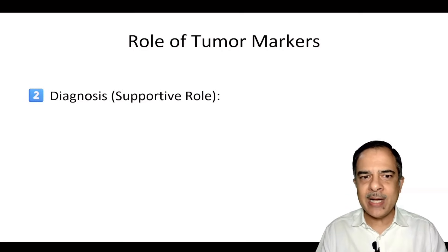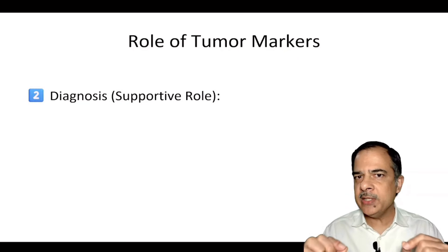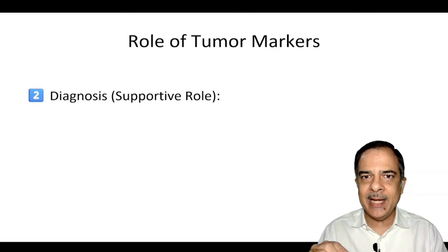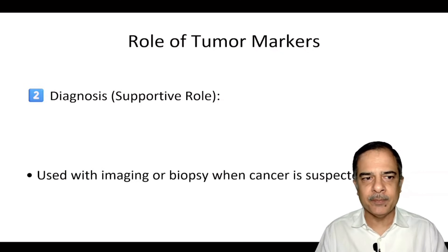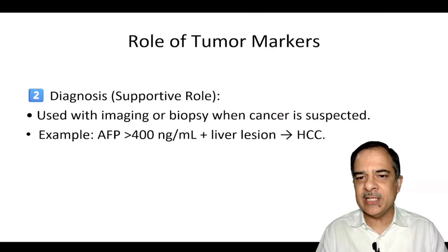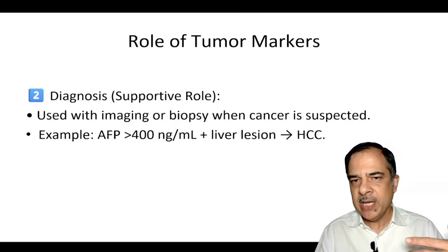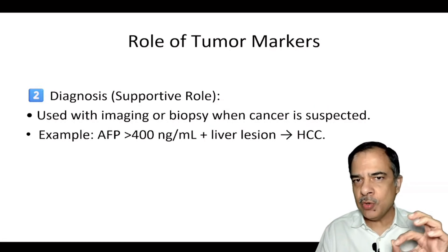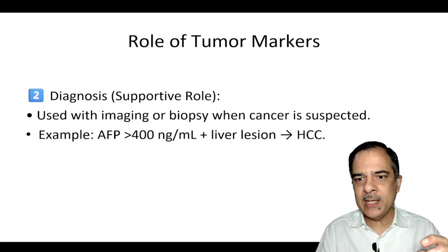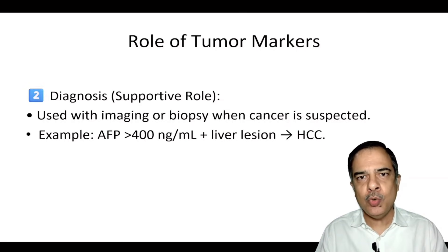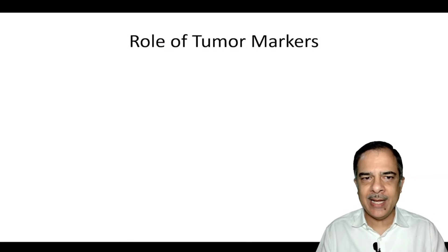The second role is diagnosis. Remember, cancer markers are only used to support the diagnosis along with clinical features and radiological imaging — used with imaging or biopsy when cancer is suspected. For example, if alpha-fetoprotein levels are high and there is a liver lesion or space-occupying lesion on ultrasound or CT scan, most likely it will be hepatocellular cancer.